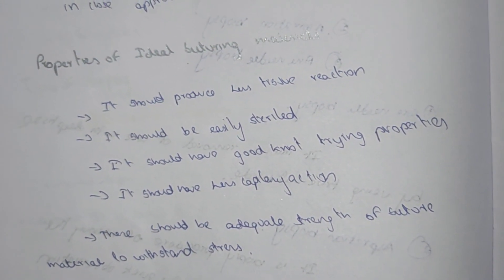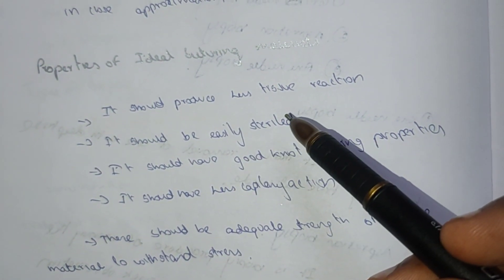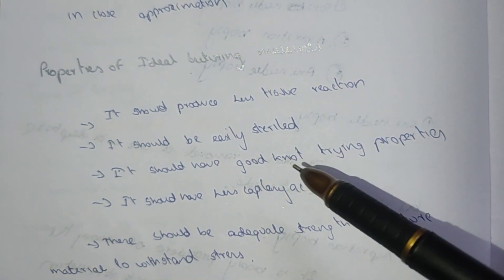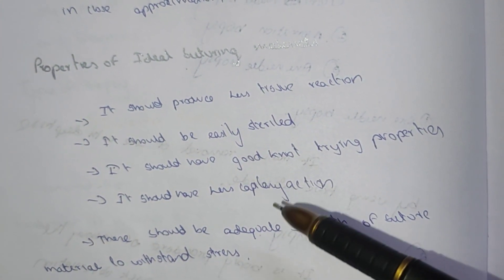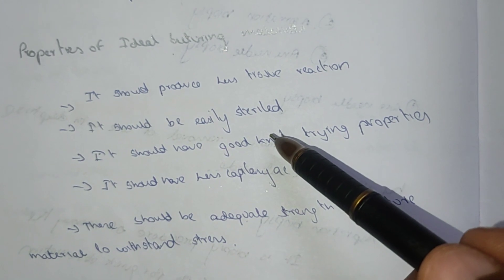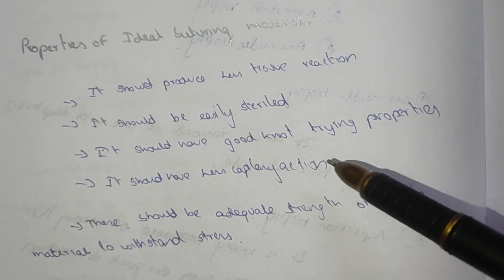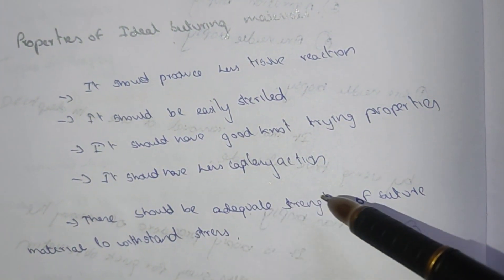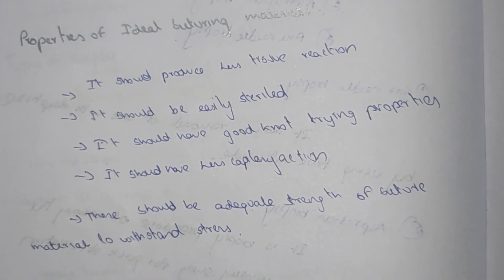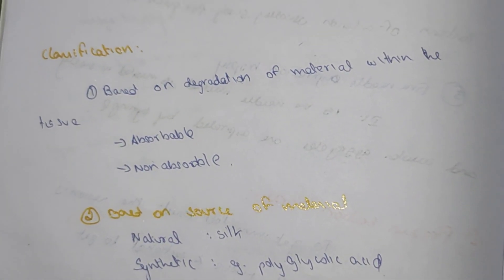These are the properties of the suture material. First, it should produce less tissue reaction. It should be easily sterilized, have good knot tying property, have less capillary action, and there should be adequate strength of the suture material to withstand the stress.